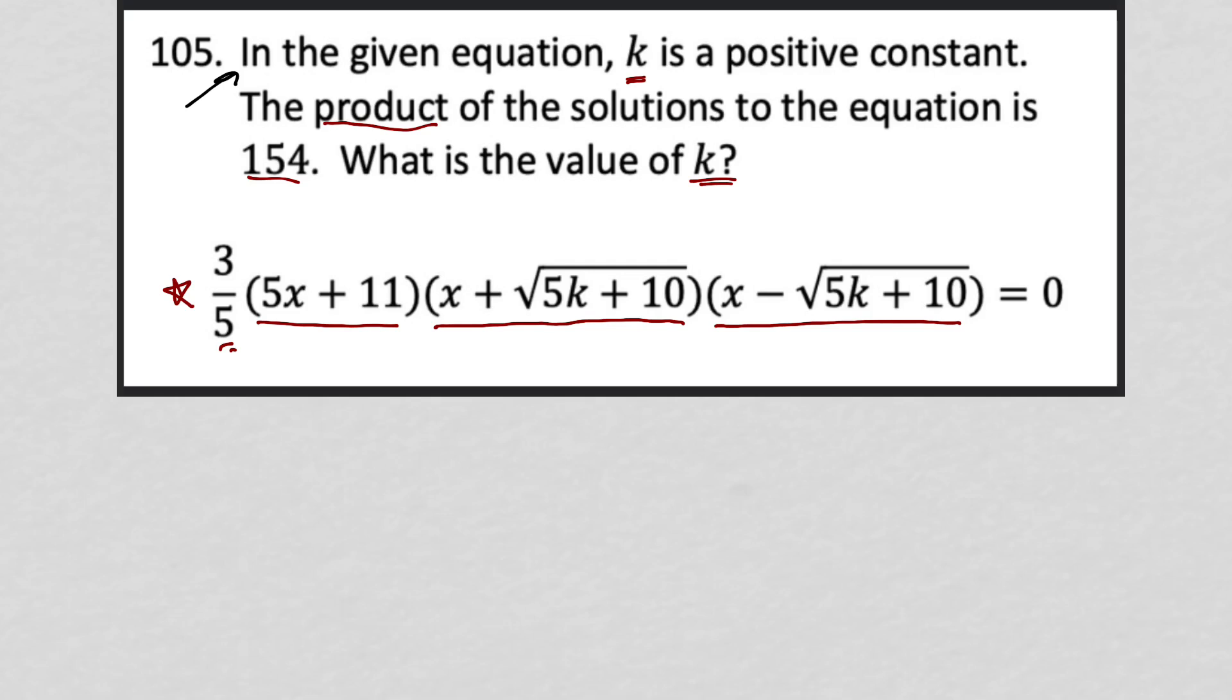So in order to find the solutions, we would set each of these binomials separately equal to 0. So I could say 5x plus 11 equals 0. I could say x plus square root 5k plus 10 equals 0. And I could say x minus root 5k plus 10 also equals 0.